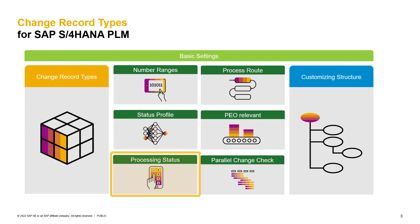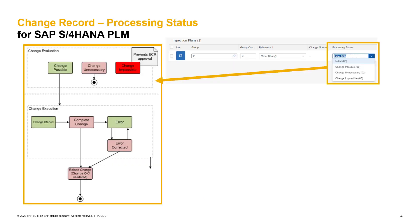The next setup is the checkbox for the processing status. If the processing status is set, then the processing status needs to be maintained at the change record item level. In a change evaluation where no change number has been generated, we are able to set the processing status from initial to change possible, change unnecessary, or change impossible.